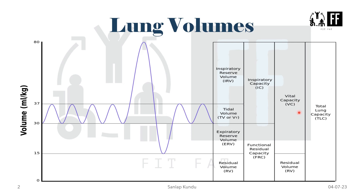Now we will talk about vital capacity. Vital capacity is the maximum volume of air that can be expelled out forcefully after a deep or maximal inspiration. Vital capacity equals inspiratory reserve volume plus tidal volume plus expiratory reserve volume.